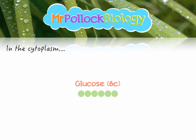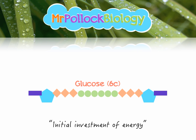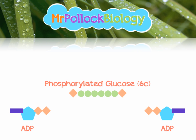Glucose is pretty unreactive, so our first step in glycolysis is to make it more reactive. We do so by investing energy in the form of phosphate. We use ATP to invest some energy, and the way it does this is it binds and attaches two phosphates onto either end of our glucose chain, thus phosphorylating the glucose and forming phosphorylated glucose. As a byproduct of this we also get two molecules of ADP, adenosine diphosphate.